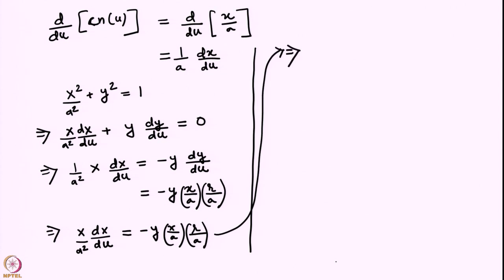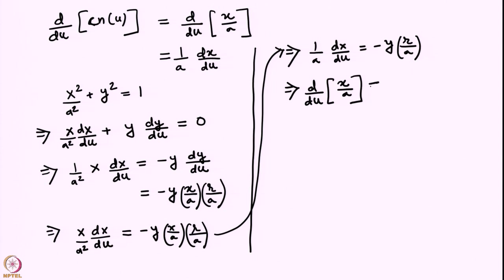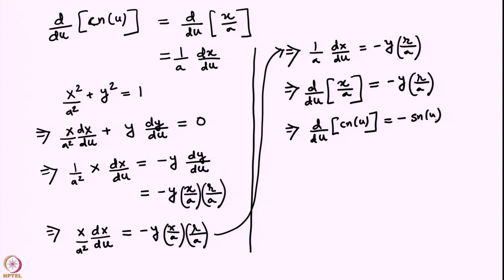I can cancel out an x/a on both sides, leaving (1/a)·(dx/du) = −y·(r/a). This is what we want. Therefore d/du of CN(u) = −SN(u)·DN(u), where y is SN(u) and r/a is DN(u). We do expect a minus sign here because this generalizes d/dθ of cos θ = −sin θ.